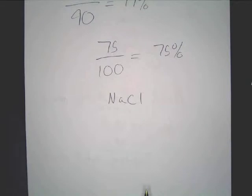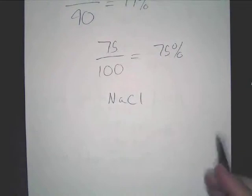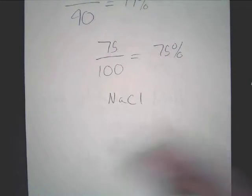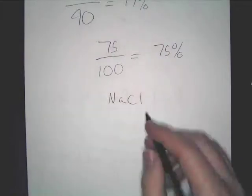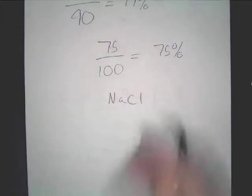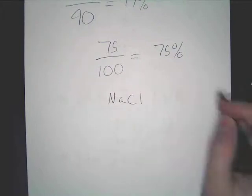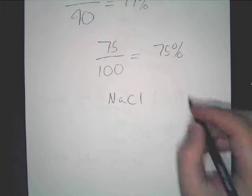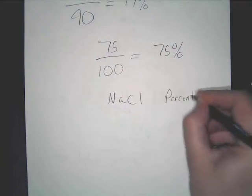We're going to talk about percent composition. We're looking at something like NaCl, and what we want to do is find the percent composition of the compound itself. To do that, we need to look at the percentage by mass. This is the important part — we're going to find percent by mass, so write that down.